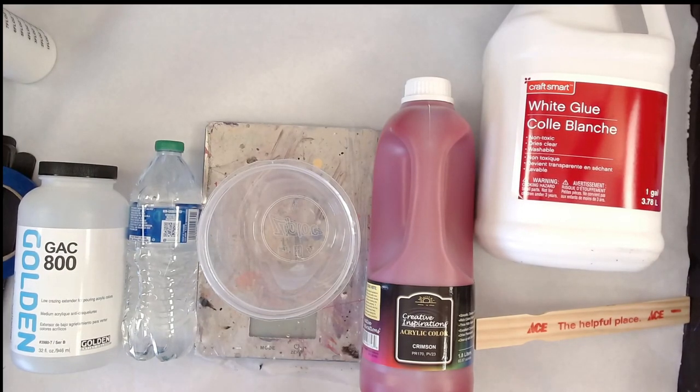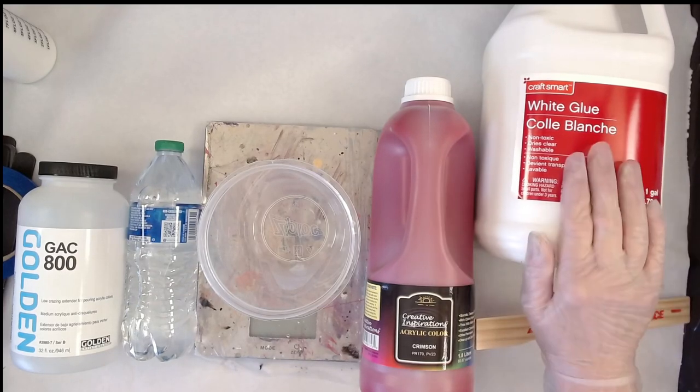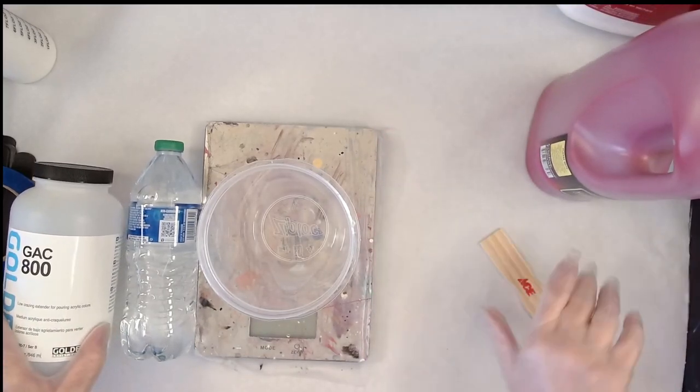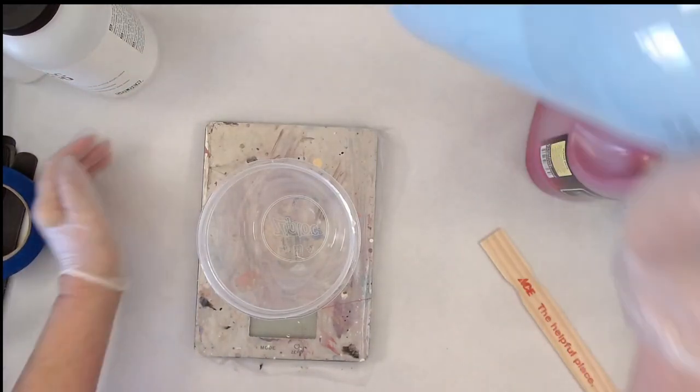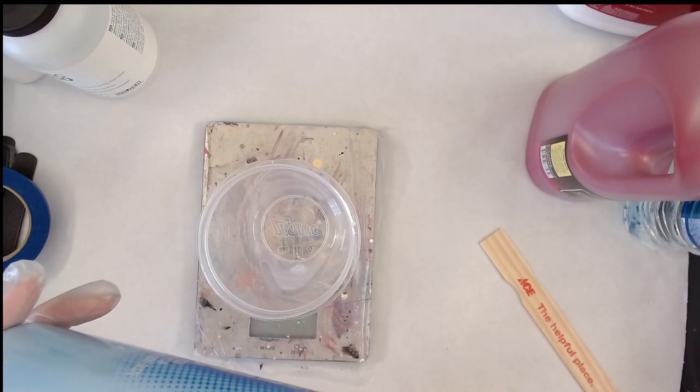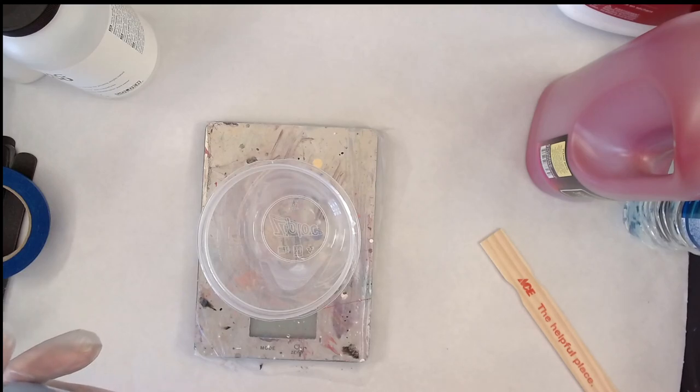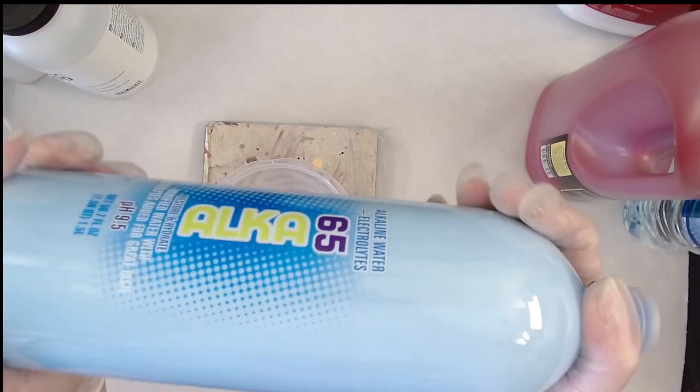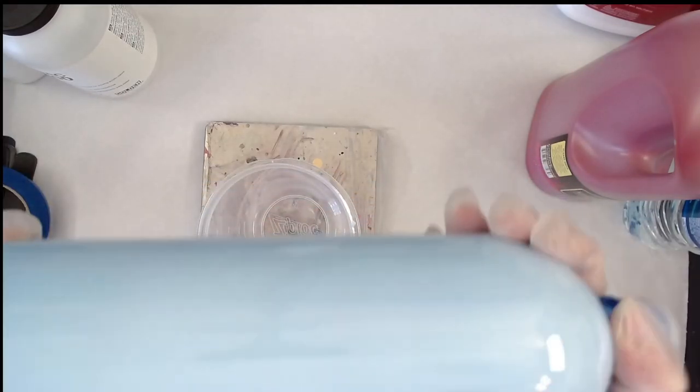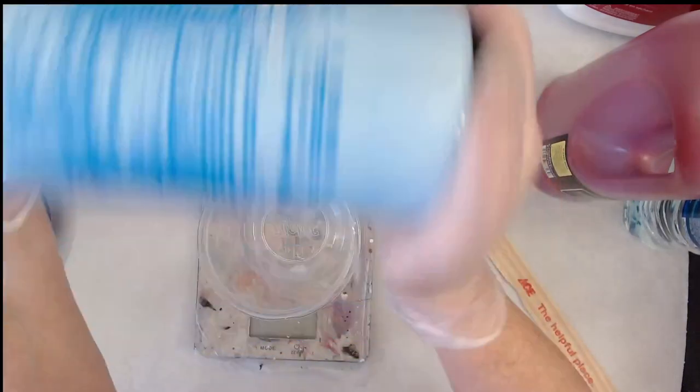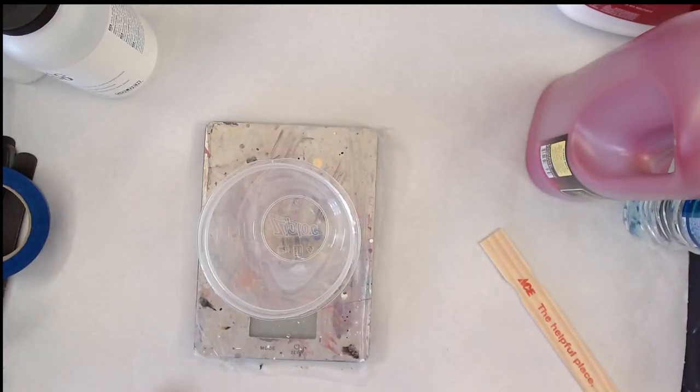Today I'm going to mix some acrylic inspirations crimson with my glue and water and GAC 800 mix. I already have it in a bottle. This is mixed 60% glue, 30% water, and 10% GAC 800. Easiest way to figure that out is to do six ounces of glue, three ounces of water, and one ounce of GAC 800. You've got to shake that baby to make sure everything's mixed together.